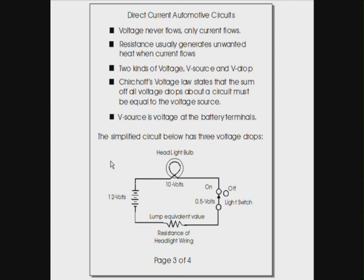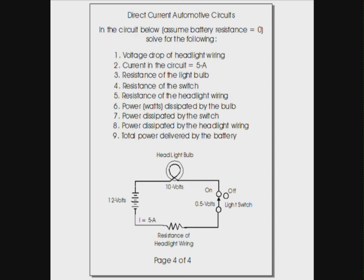Let's go ahead and see what we want to know about this circuit. Let's take a moment here and see what we know about this circuit. Someone took an amp meter and they measured the current at the negative terminal of the battery, and they found it to be 5 amps. So we're given that the current in the circuit is 5 amps. We know there's 10 volts across the bulb. We know there's 0.5 volts across the switch. We realize using Kirchhoff's voltage law there's 1.5 volts across the resistance of the headlight wiring.